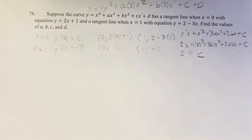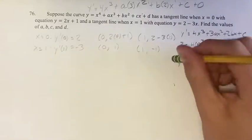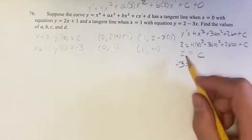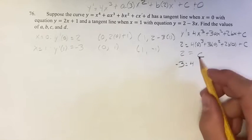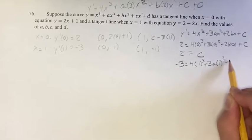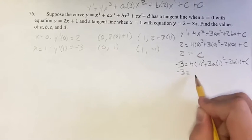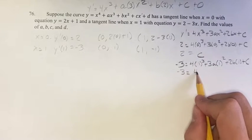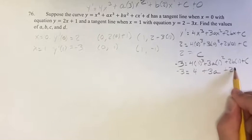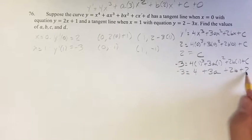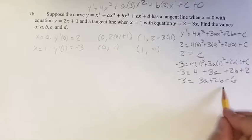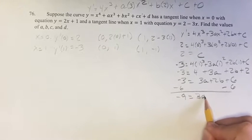Our next piece of information is that y prime equals negative 3 when x equals 1. Plugging in 1 for x: 4 times 1 cubed plus 3a times 1 squared plus 2b times 1 plus c equals negative 3, which gives 4 plus 3a plus 2b plus 2 equals negative 3. Subtracting 6 from both sides gives us negative 9 equals 3a plus 2b.